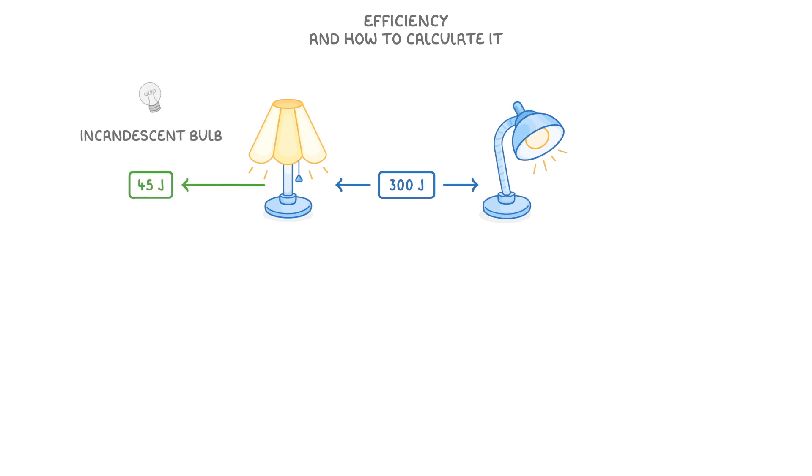To put this into practice, let's imagine that we have two lamps, and we supply 300 joules to each of them. The one on the left has an old incandescent bulb, which converts 45 joules of that 300 into light energy.